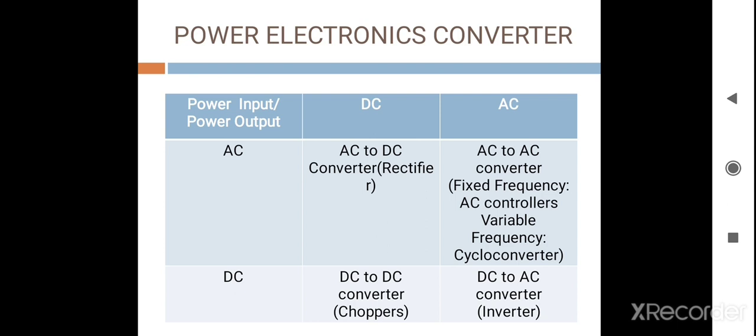Another type of converter converts DC into DC, and they are known as choppers. And some converters convert DC into AC, which is popularly known as an inverter.